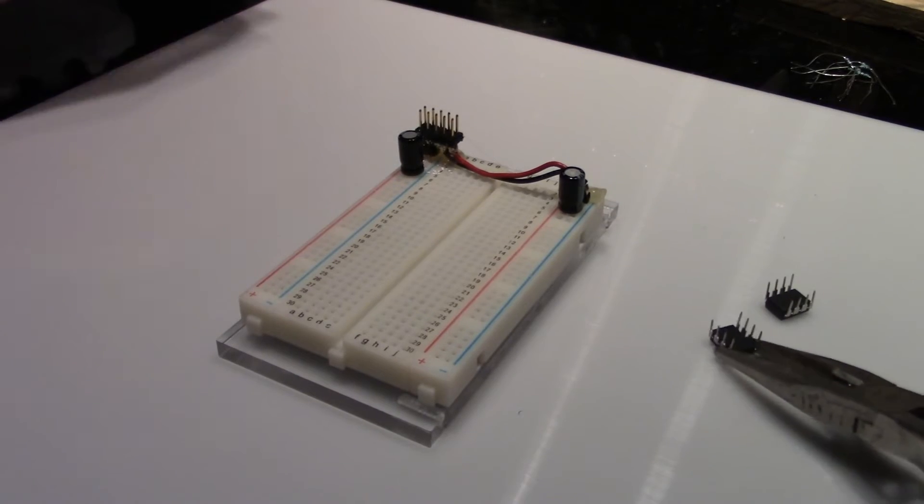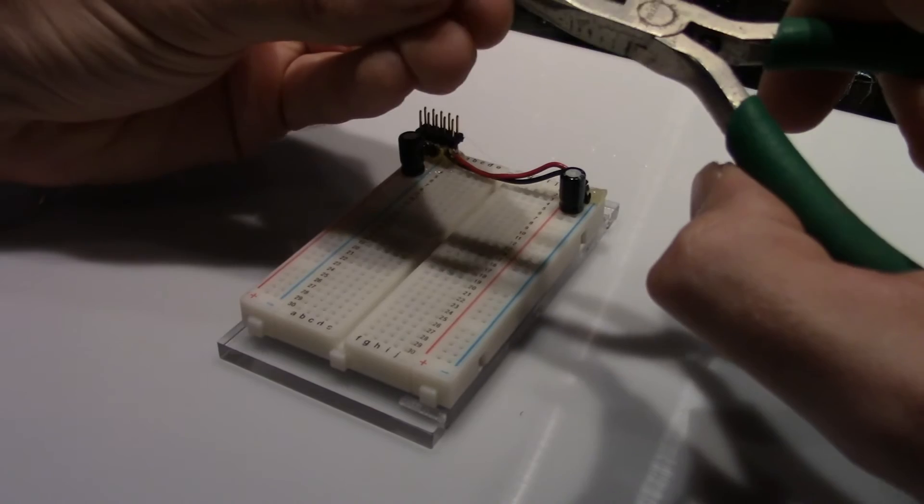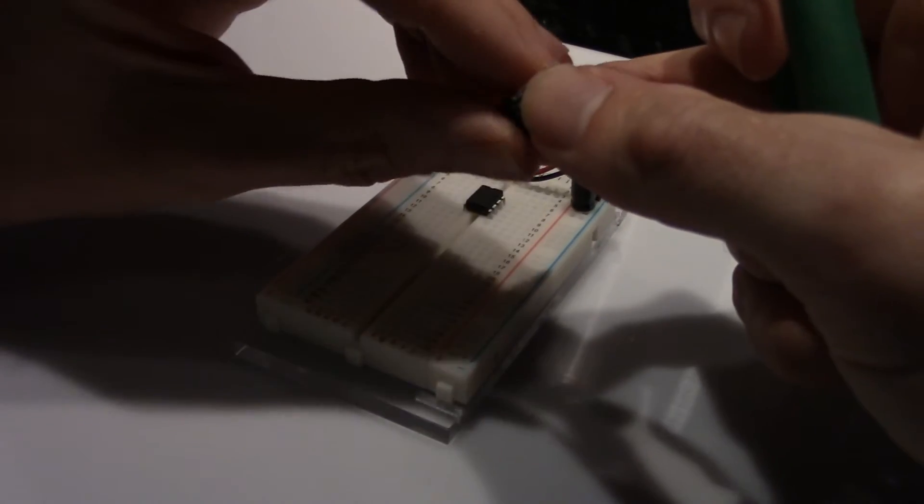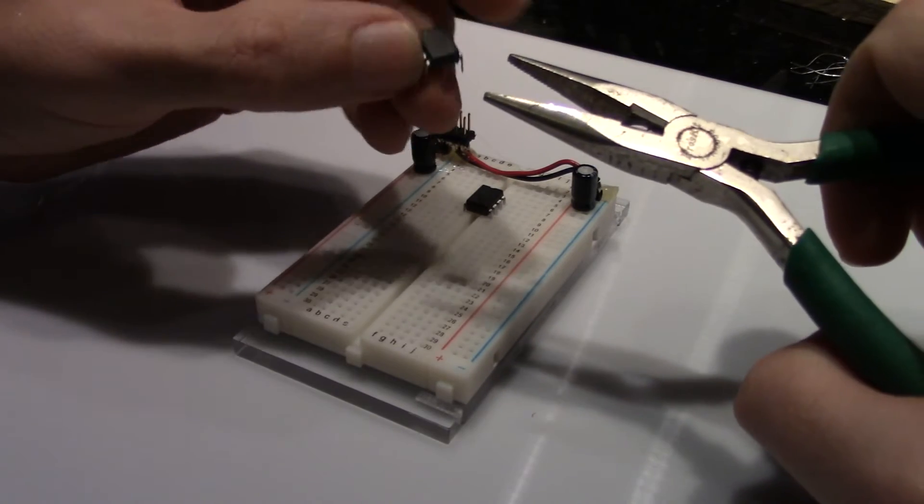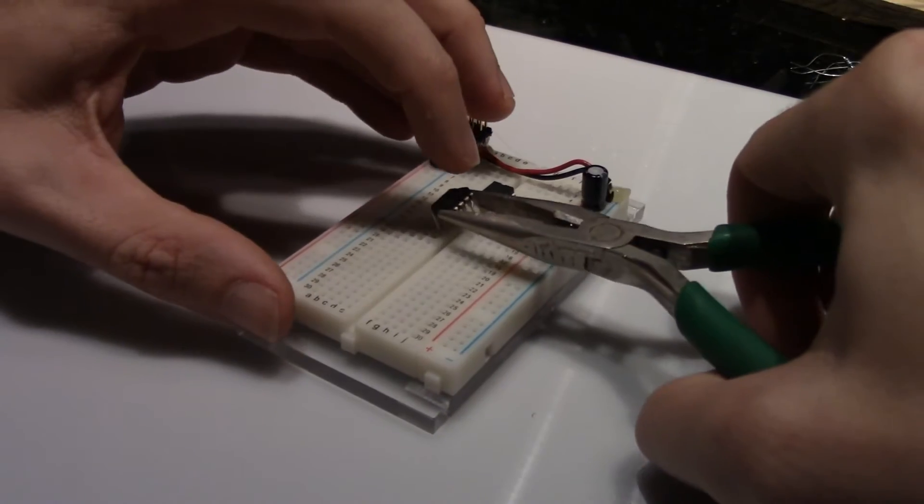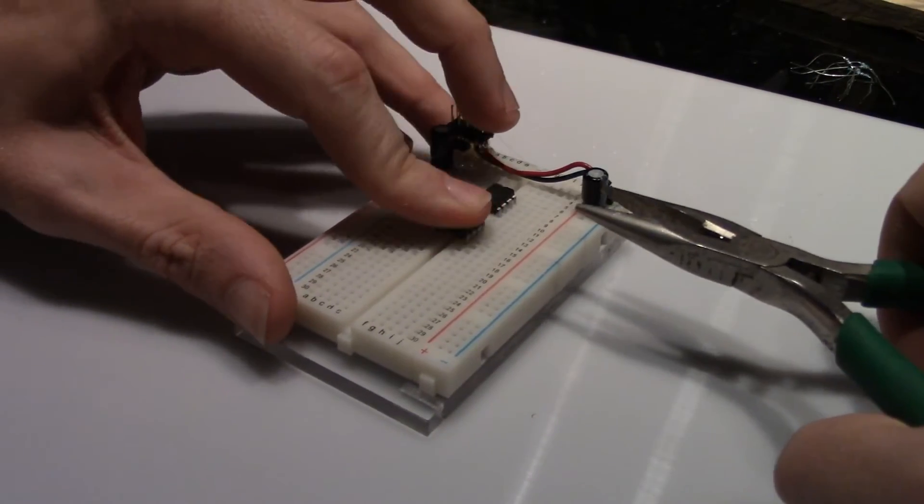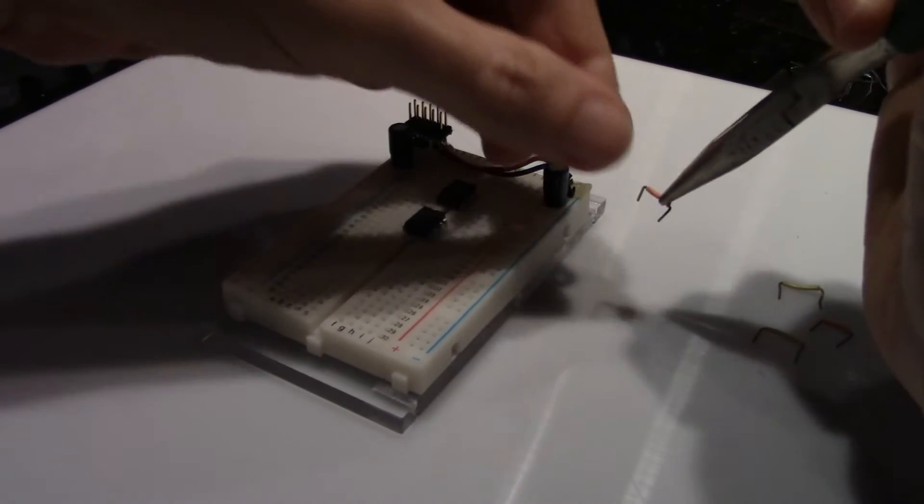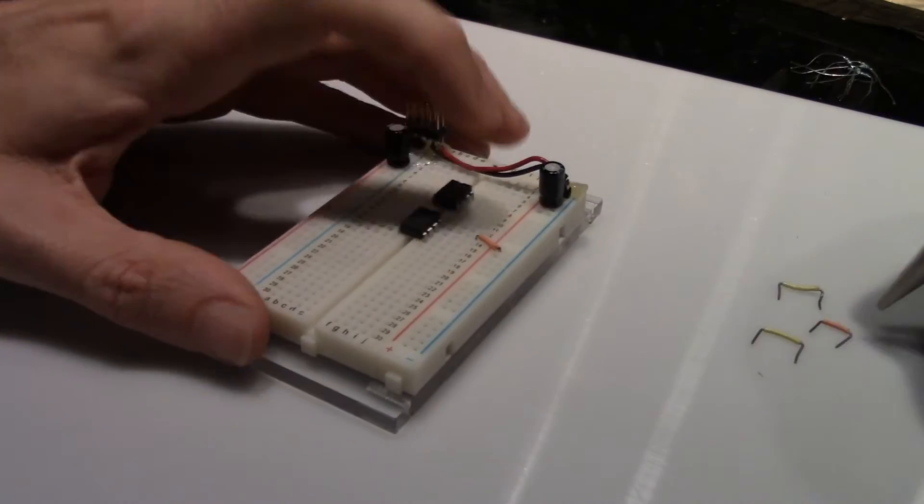Then place the chips on the board. The dot on the chip denotes pin 1 and it should be on the left side. Leave some room between the chips for easier wiring. Next add the power and ground connections. Both chips are the same. Positive to pin 8 and negative to pin 4.